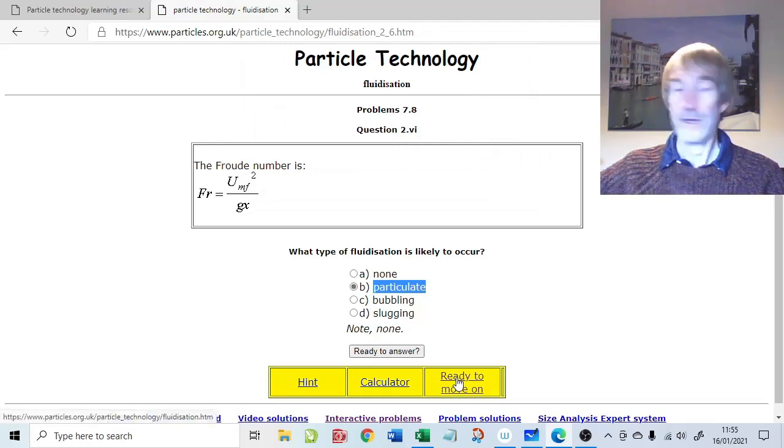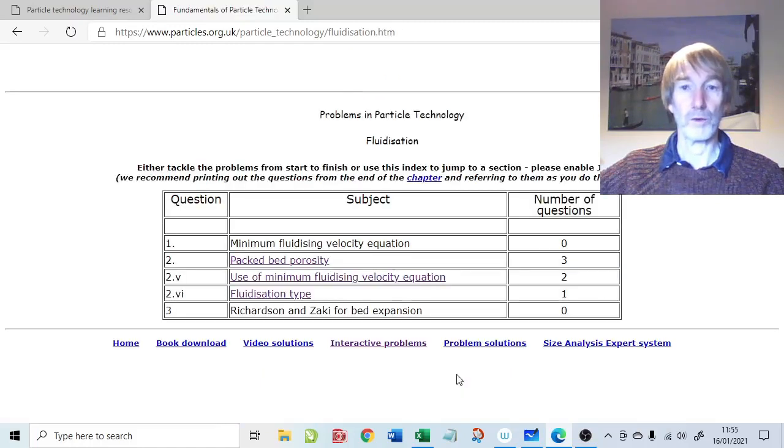And that is fluidization, minimum fluidizing velocity, and a calculation on how to obtain it, plus the check that we've used the right equation, and also a check on the type of fluidization we would expect to see. So we move on, and then that takes us to the next question, which is a separate video. So, goodbye.